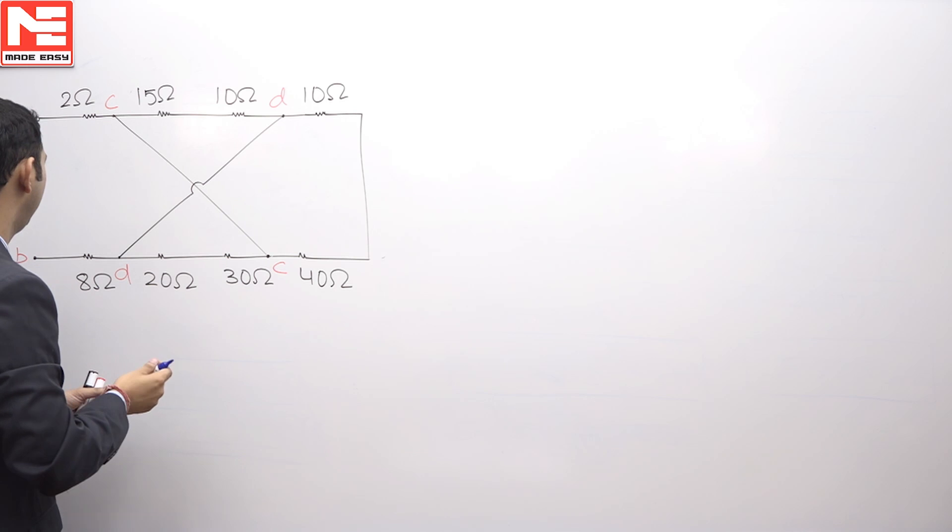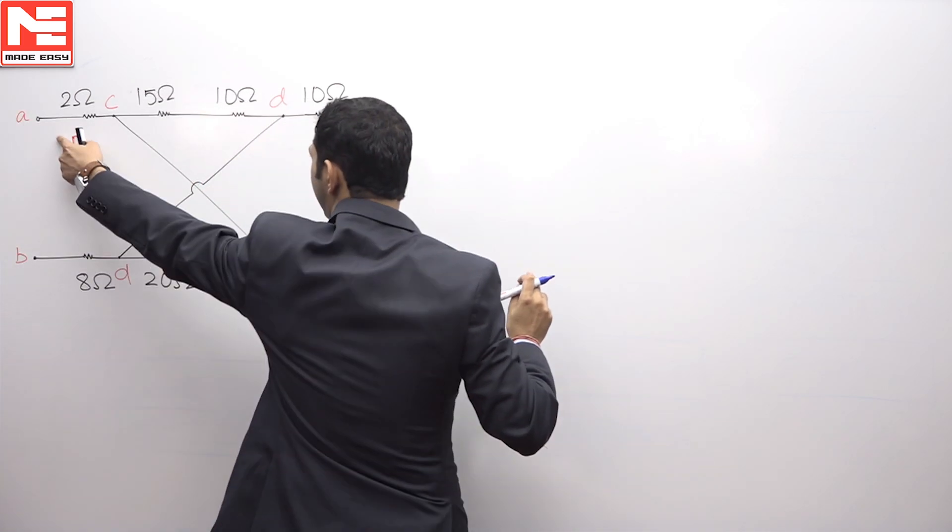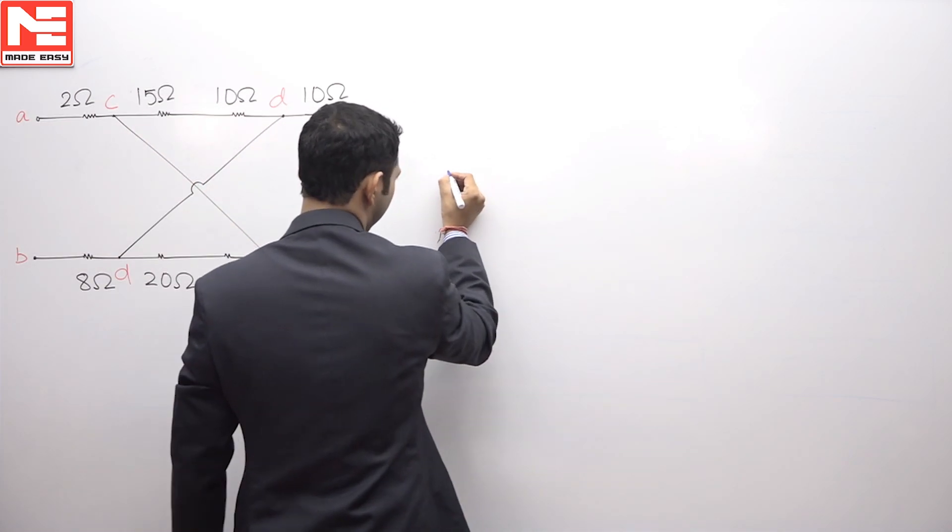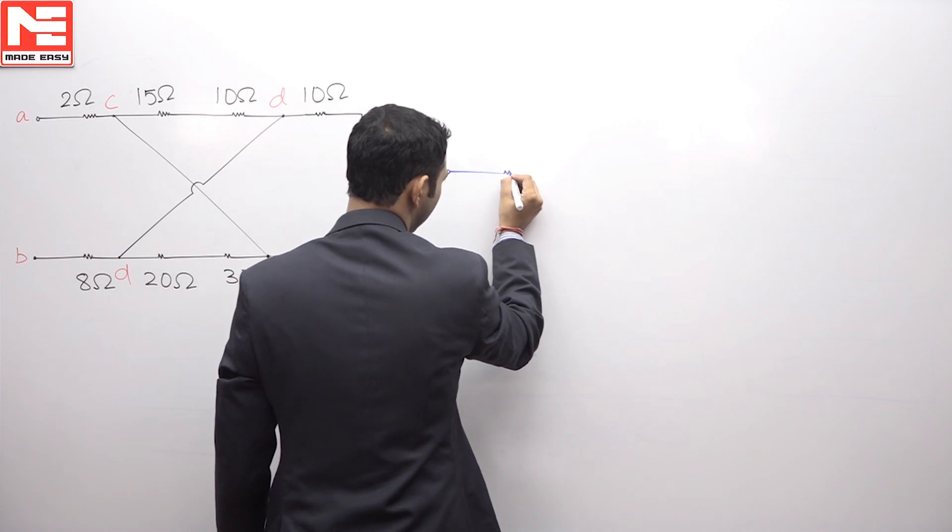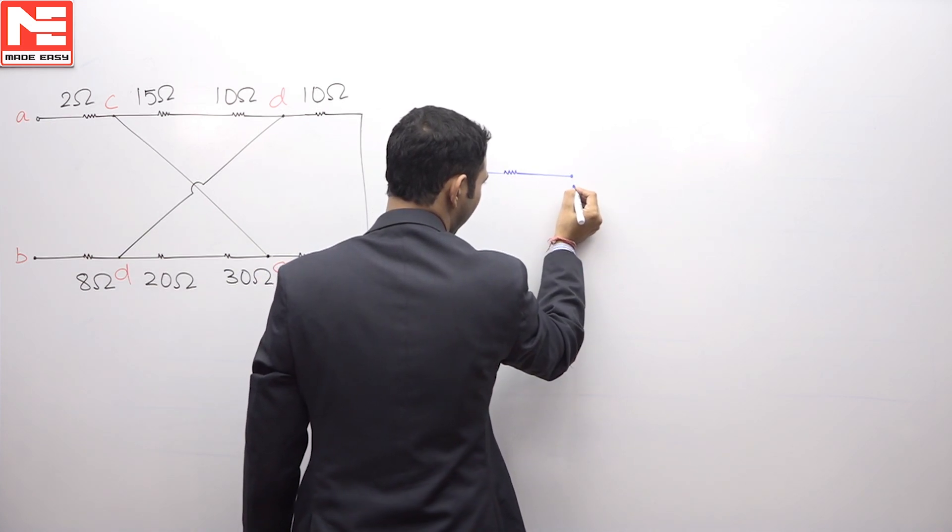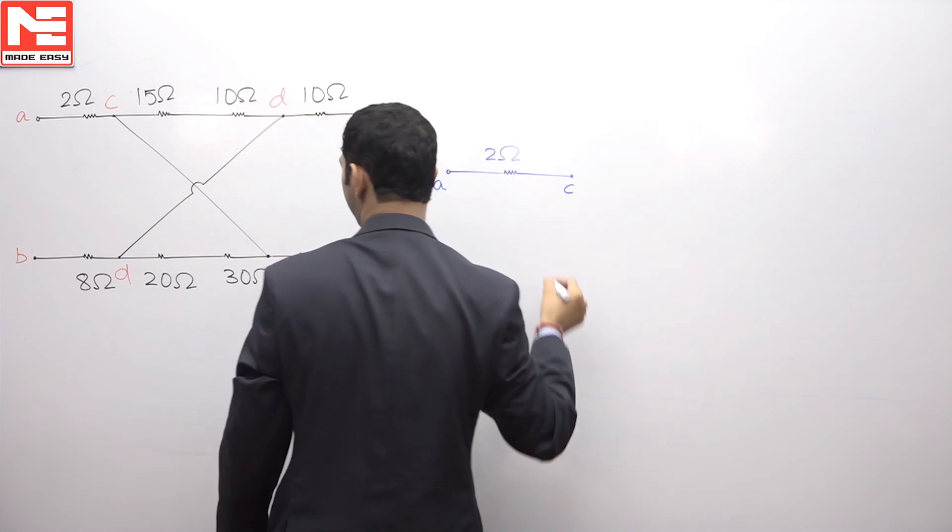Redraw this circuit, so we can see between A and C, 2 ohm is connected. So let us connect it over here. This is point C, this is point A, between them, 2 ohm is connected.